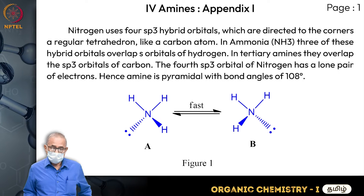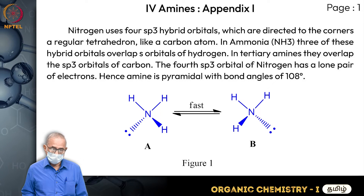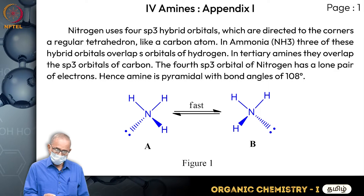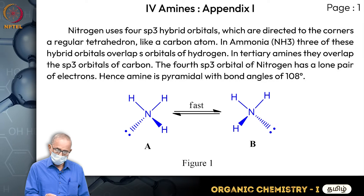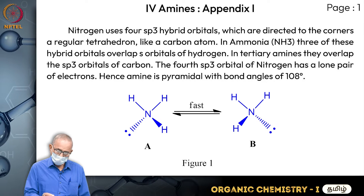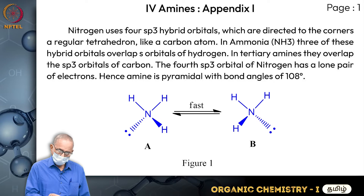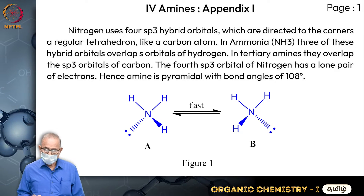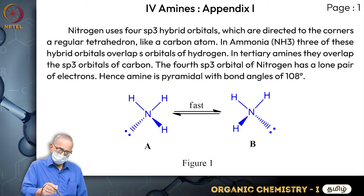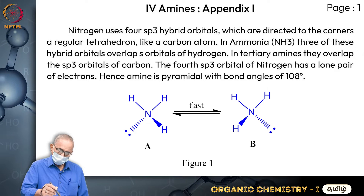Nitrogen uses four sp3 hybrid orbitals which are directed to the coordinates of a regular tetrahedron, like a carbon atom. This is how the ammonia molecule is arranged - this nitrogen is sp3 hybridized. The first sp3 hybrid orbital is attached to one hydrogen, the second sp3 to another hydrogen, the third to a third hydrogen, and one of the sp3 hybrid orbitals contains the lone pair of electrons. Hence this molecule is a pyramidal compound, with the lone pair on one side and all three hydrogens above the plane.